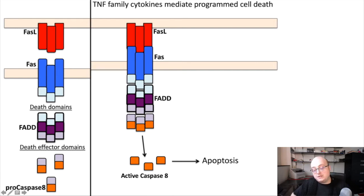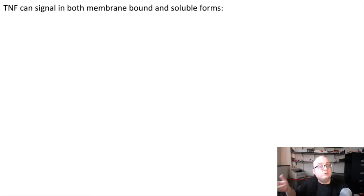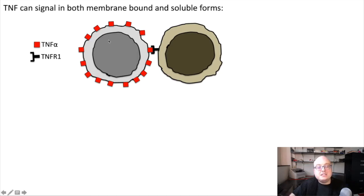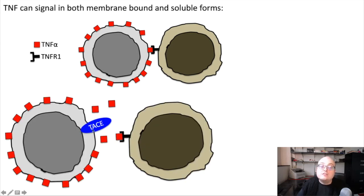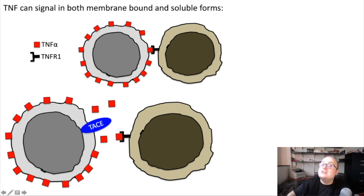The other important thing about TNF family cytokines is that they can signal in both membrane-bound and soluble forms. In the case of FAS-L, that was a membrane-bound cytokine. Other TNF cytokines, like TNF-alpha, can also signal as membrane-bound cytokines — displayed on the surface of an immune cell, activating receptors on target cells. But this requires close physical proximity of the cells. However, when immune cells become activated, they can begin to express an enzyme called TACE, or TNF-alpha-converting enzyme. TACE clips the TNF-alpha molecules off the surface of the cell.